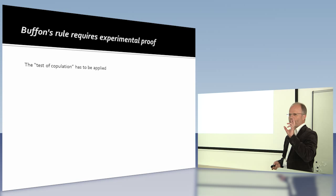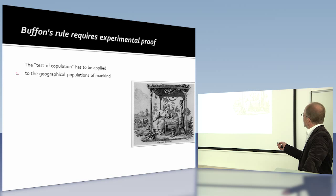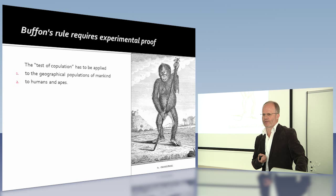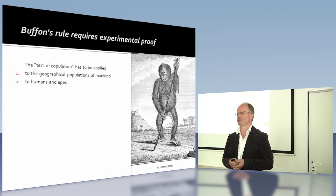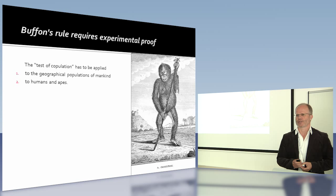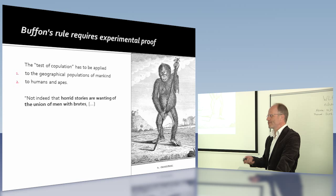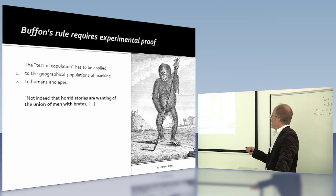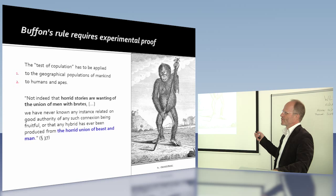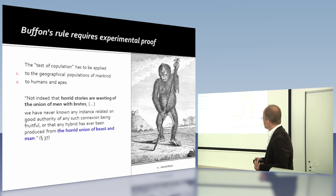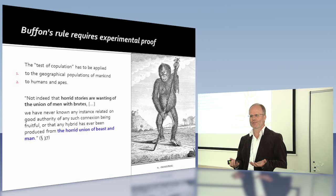If you go to humans, this test of copulation has to be applied to the geographical populations of mankind, and then to humans and apes — otherwise we wouldn't know they are different species. As you may know, in the beginning of the 20th century, this test was actually tried in Senegal. Why wouldn't we do this test of copulation? Blumenbach says, well, there are these horrid stories of the union of men with brutes. We never know of any instance of good authority that any such connection has been fruitful. So he has an aesthetic and moral problem with doing the experiment.